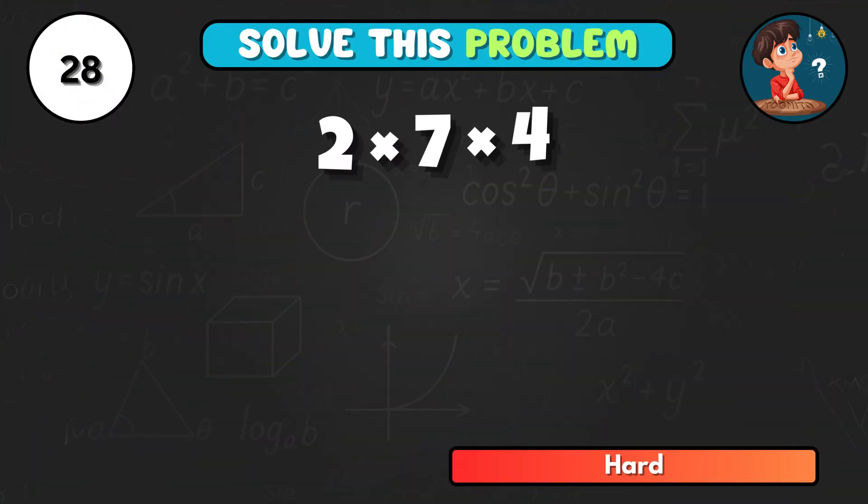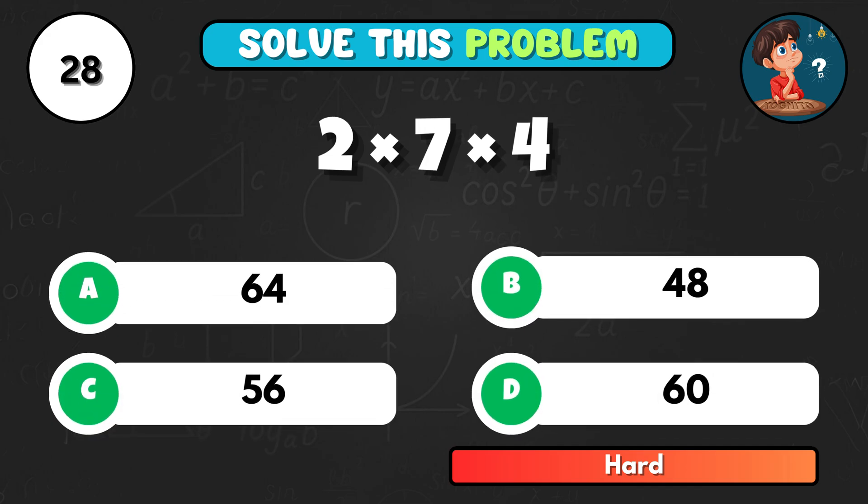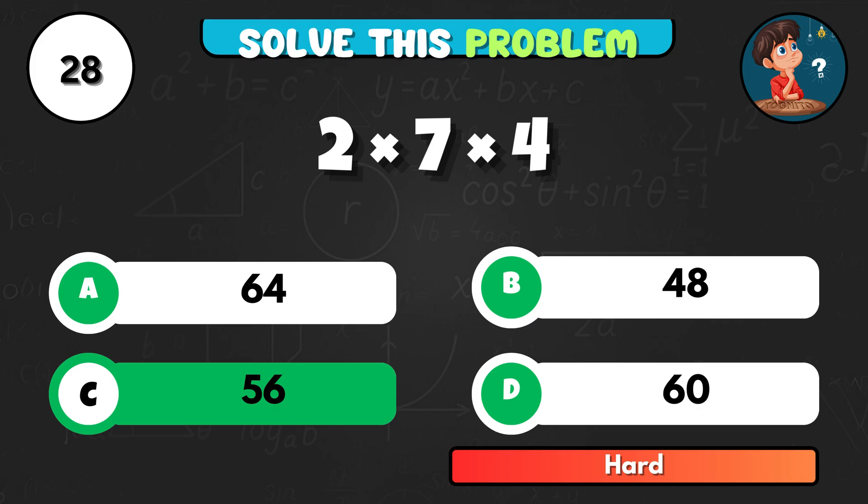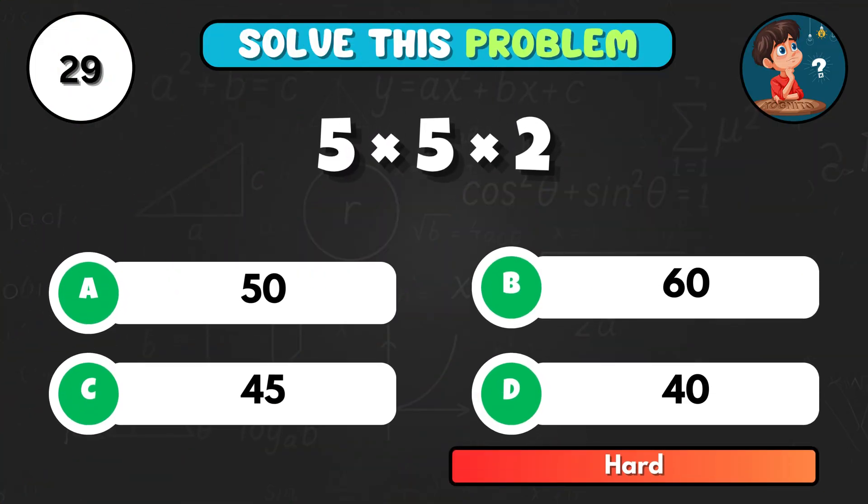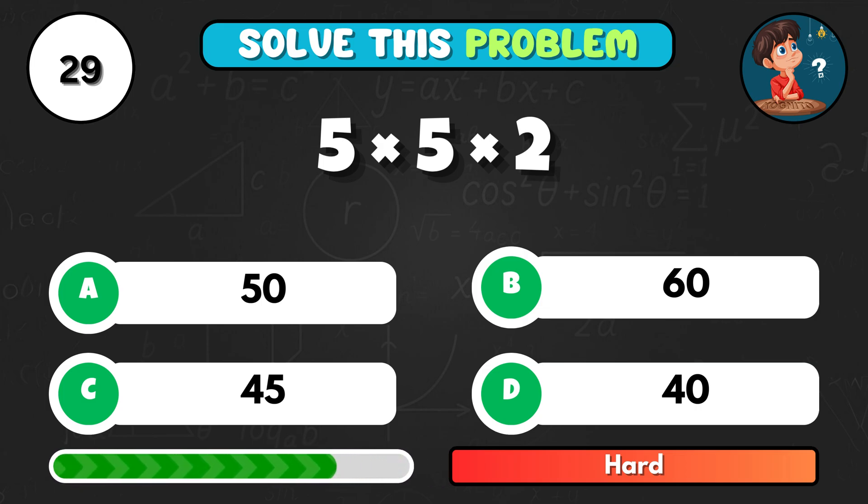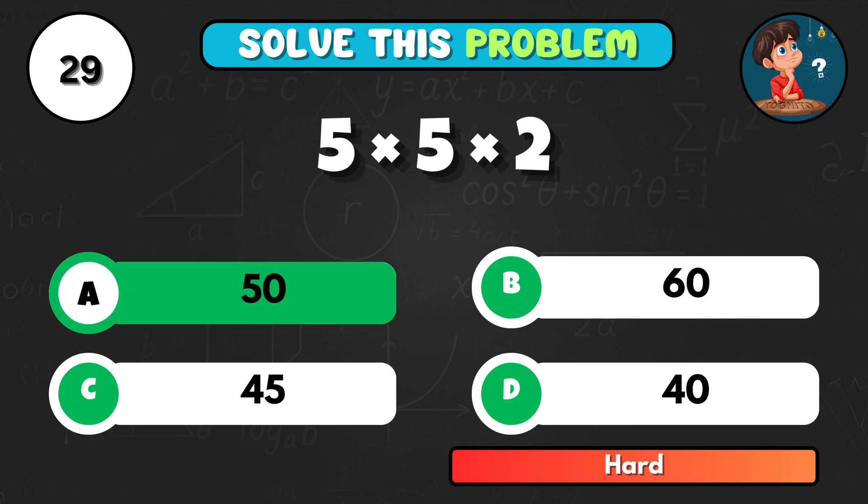Solve this. 2 times 7 times 4. That's C, 56. Ready? 5 times 5 times 2 equals... It comes to A, 50.